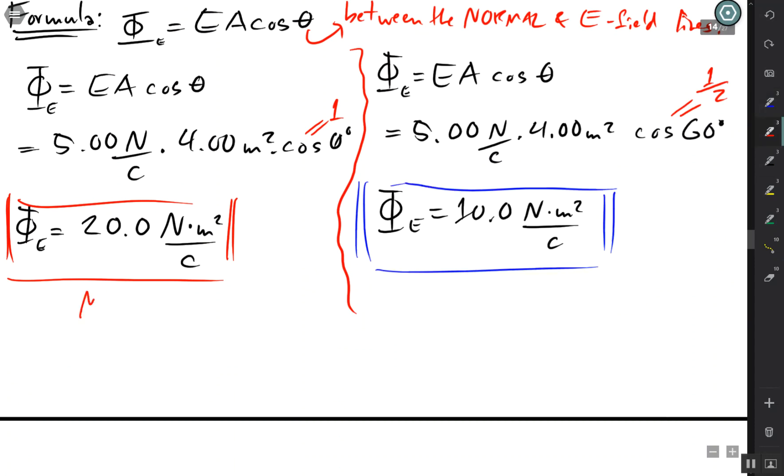So this one doesn't take that long, and that should give us the answer. Right here we had more electric field flux, and here we had less. Hopefully you're able to understand this one a little bit more. These are one-shot problems, and that is pretty much it.